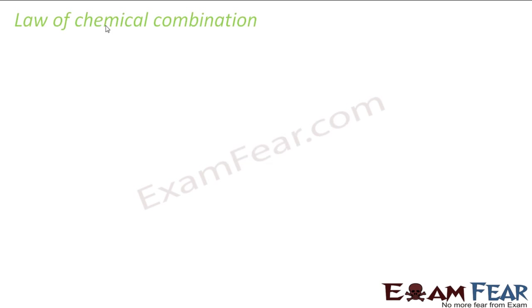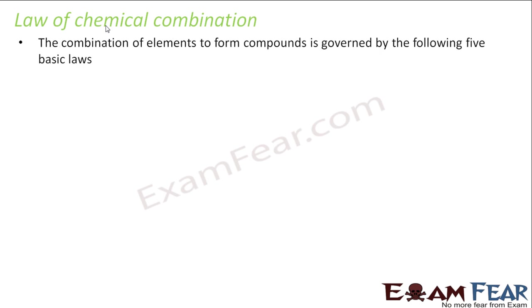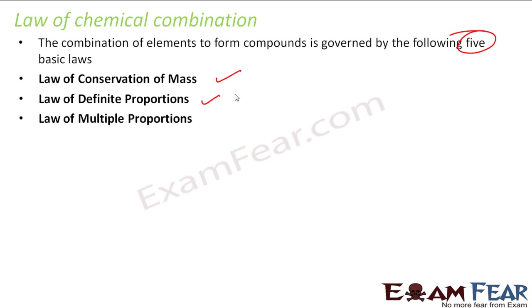Now we will talk about laws of chemical combination. There are actually 5 basic laws which govern the chemical combination. The first is law of conservation of mass. The second is law of definite proportion. The third is law of multiple proportion. The fourth is Gay-Lussac's law of gaseous volume. And the fifth is Avogadro's law. We will talk about all these laws now.